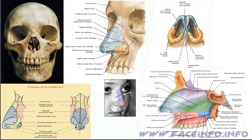These are the nostrils and wings of the nose. They are formed by skin on the outside and inside, with some fat tissue in between.